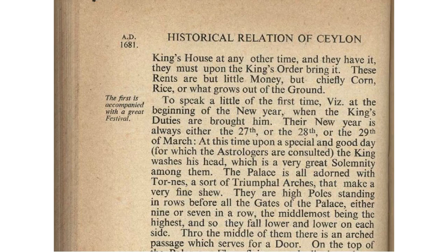Knox mentions that the new year was celebrated on the 27th, 28th, or 29th of March. Since this was published in England, it is clearly on the Julian calendar. Converting to the Gregorian calendar — accounting for the lost 10 days — the corresponding date is the 8th of April.